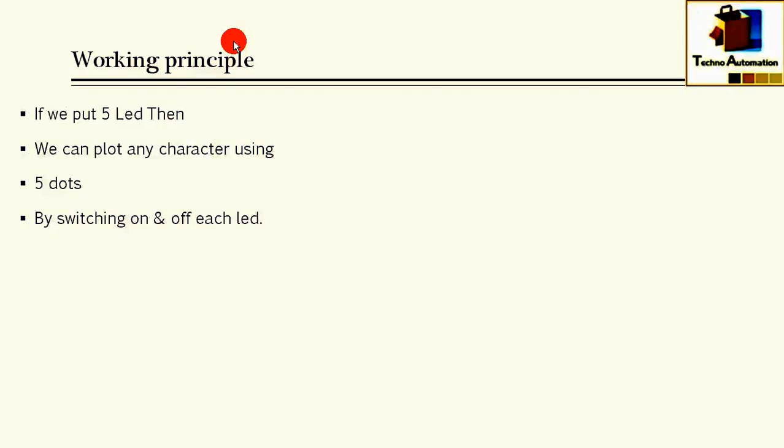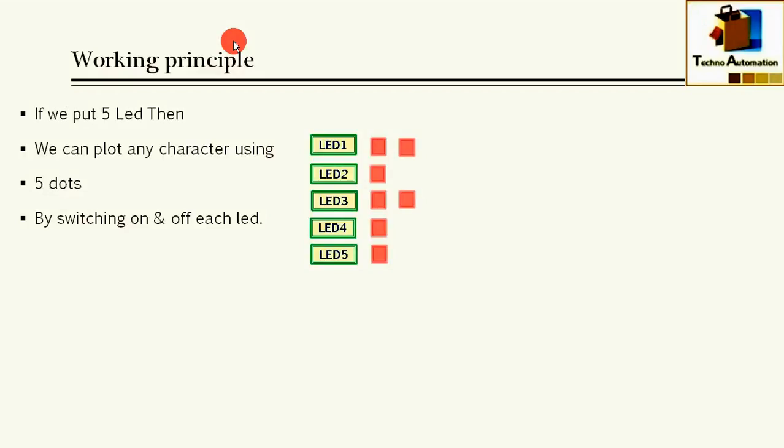If we put 5 LEDs on the same scale, then we can plot any character using those 5 dots by switching on and off each LED.